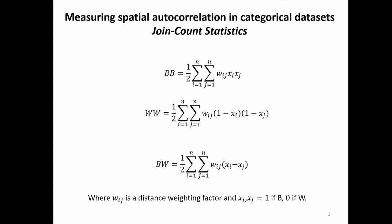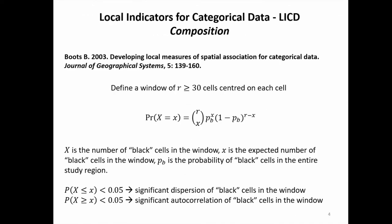Local indicators for categorical data didn't exist until quite recently. In 2003, Barry Boots explored the possibility of developing local indicators for categorical data, calling them LICD. The problem with categorical data is that local autocorrelation, because we're dealing with binomial values, requires two measurements — not only one. One is the measurement of composition, and the second is a measurement of configuration.